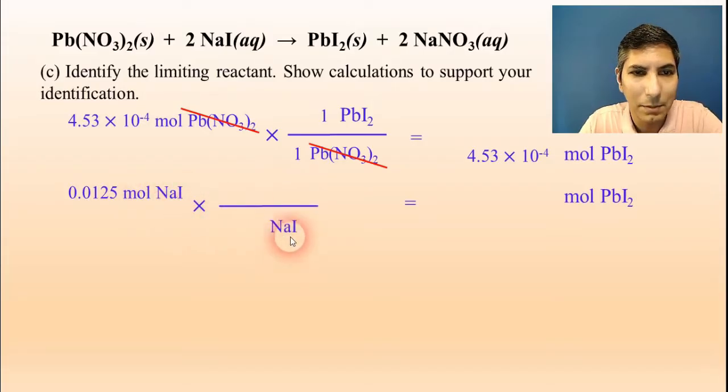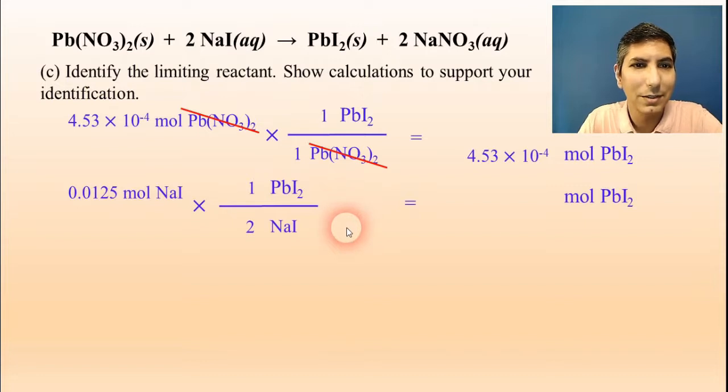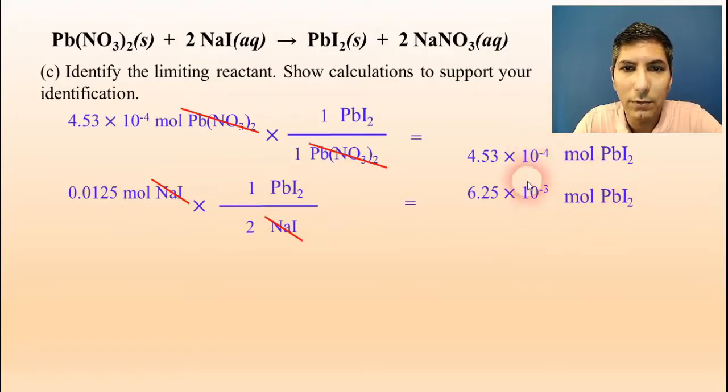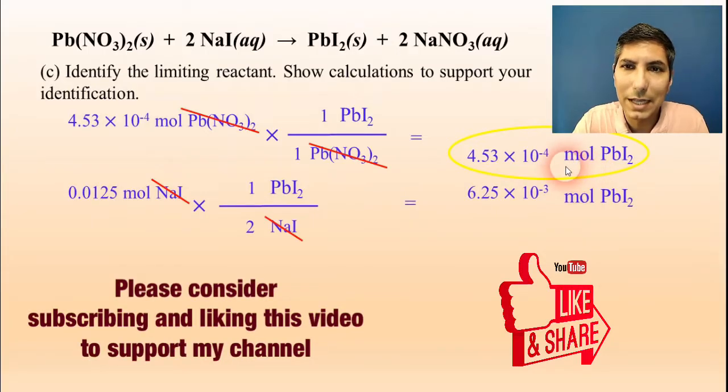For sodium iodide, though, sodium iodide on the bottom, lead(II) iodide on top, this one is a 1 to 2 ratio according to the coefficients. So when I cancel and divide that out, I find that I actually have 6.25 times 10 to the negative third moles of lead(II) iodide. So which of these is the smaller one? It's that one, isn't it? That's a little bit smaller. And so that tells us that the limiting reactant is the reactant that produces that smaller amount.